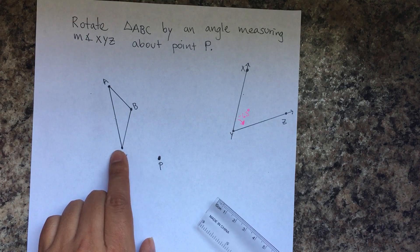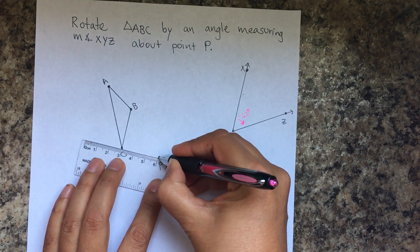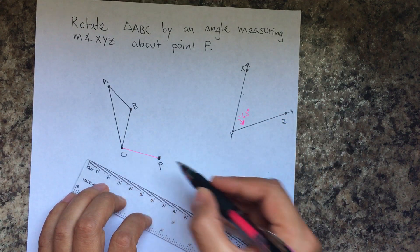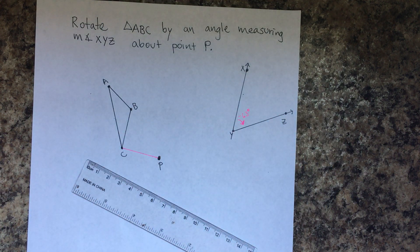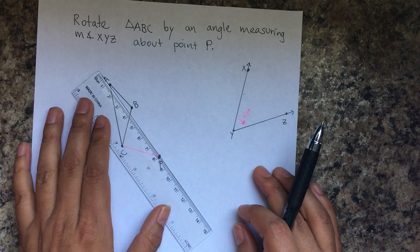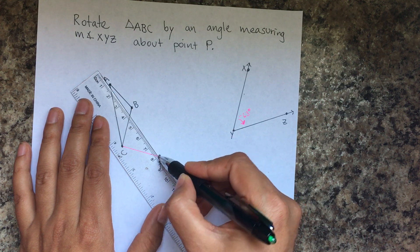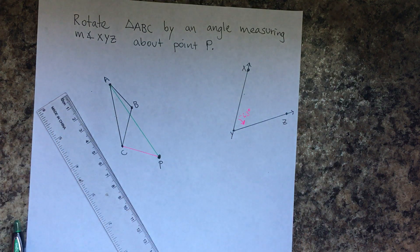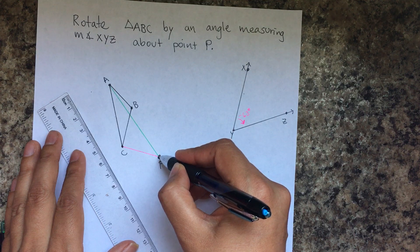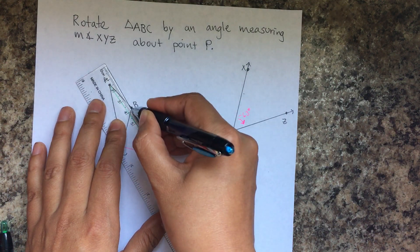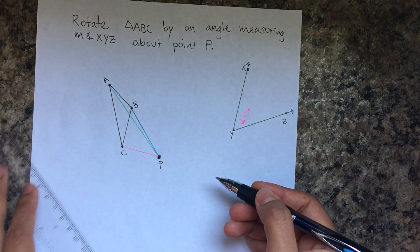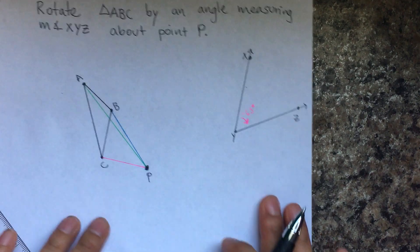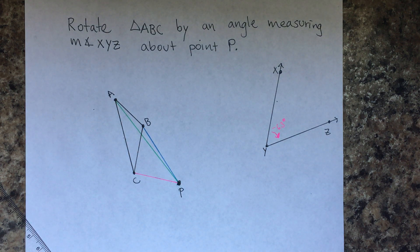The first thing we're going to do is draw lines from point P to each vertex, using different colors. I'll use pink for point C — line segment CP is pink. I'll use green for point A — line segment AP is green. And I'll use blue for point B. Using different colors is very important to keep things organized.